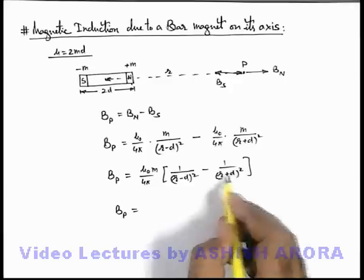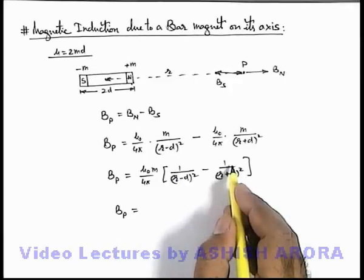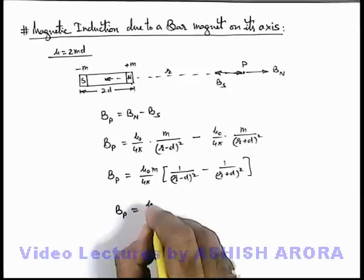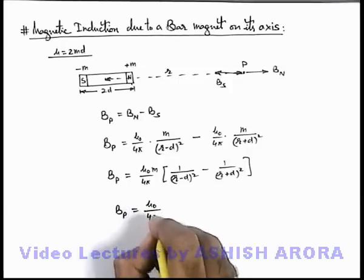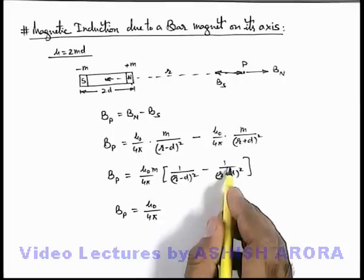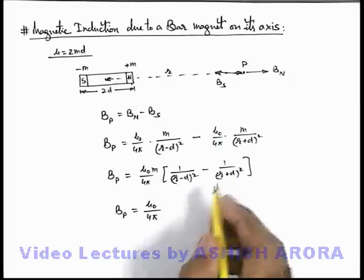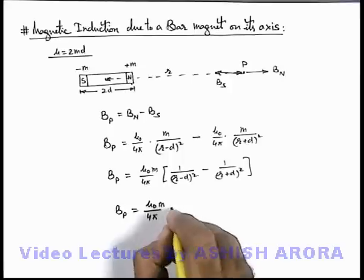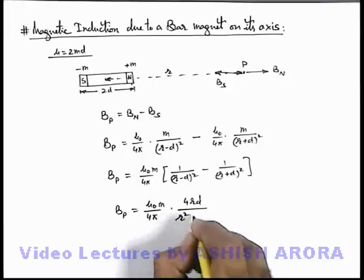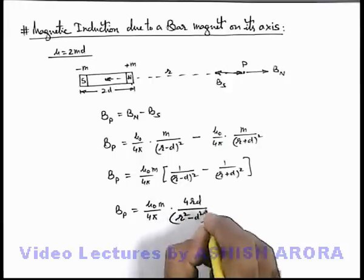If we simplify the term, in the numerator r² plus d² gets cancelled out, and what will be left over will be mu_0 over 4π. This will be 2rd plus 2rd, that will be 4rd, multiplied by m times 4rd divided by (r²-d²)².